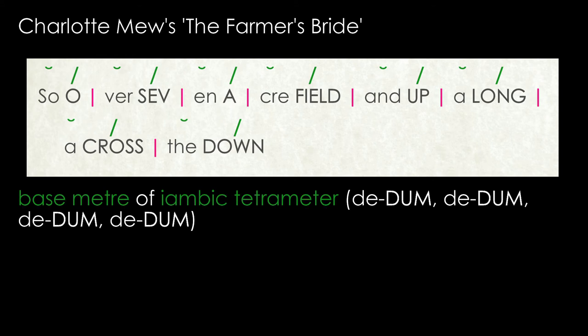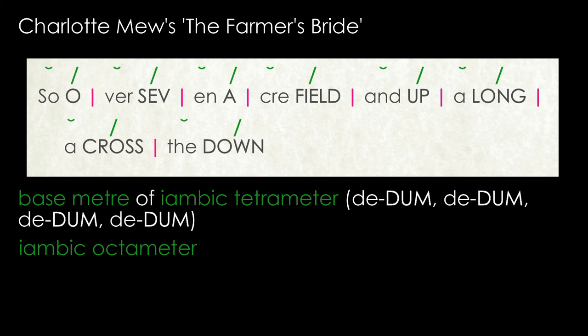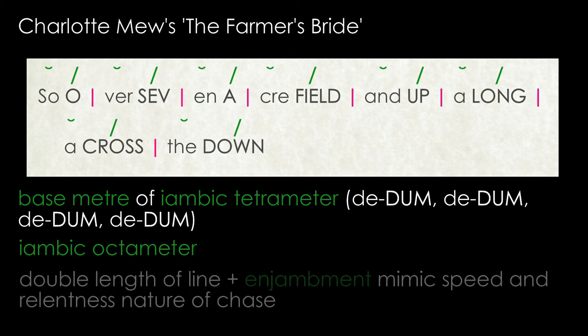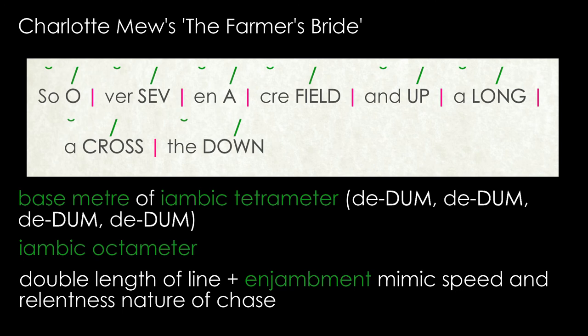In The Farmer's Bride by Charlotte Mew, we can see that one line has been written in iambic octameter — i.e., there are eight iambic feet making sixteen syllables in total. He is describing how he and his men chased his absconding bride over the countryside. The double length of this line, and the way in which the meaning of the sentence spills over onto the next line through enjambment, mimics the speed and relentless nature of the chase.